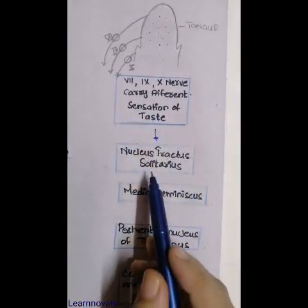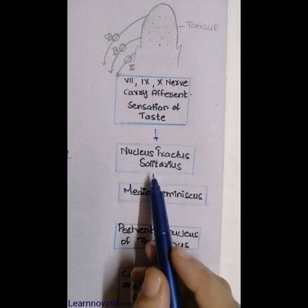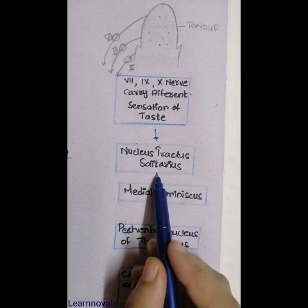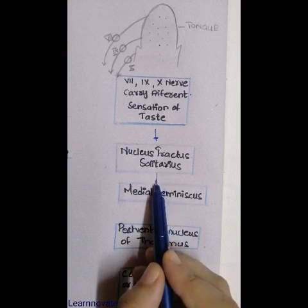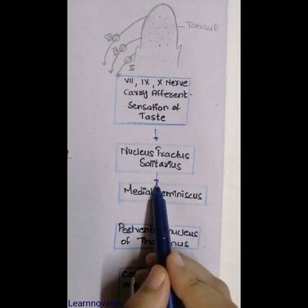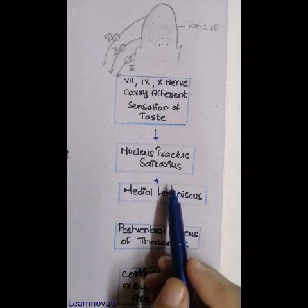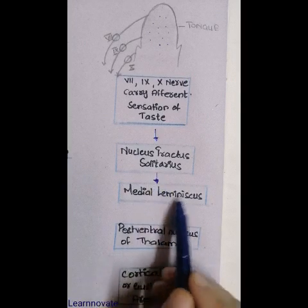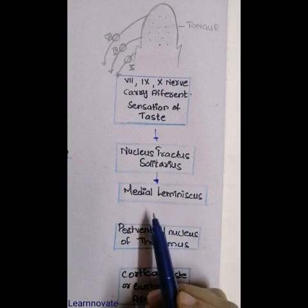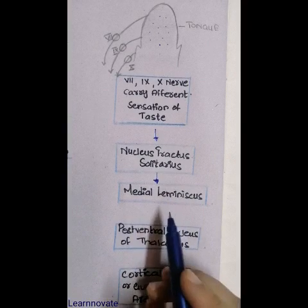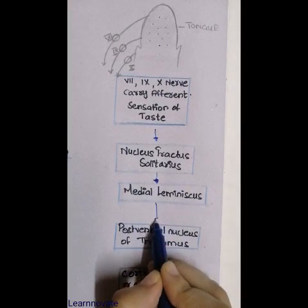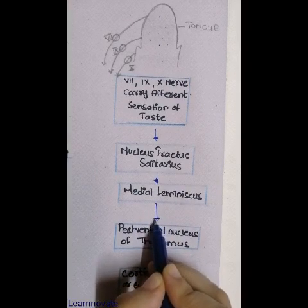From the nucleus of tractus solitarius, a second group of neurons arises and continues upward via the dorsal medial lemniscus pathway. From the medial lemniscus pathway, these neurons relay at the post-ventral nuclei of the thalamus. So there is a relay station at the thalamus.